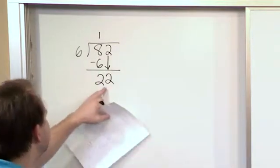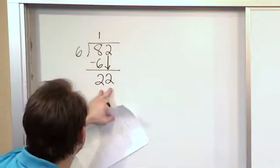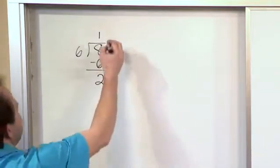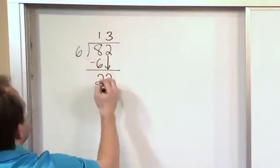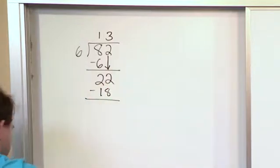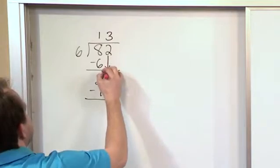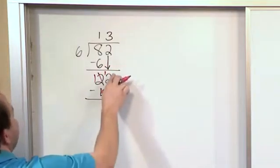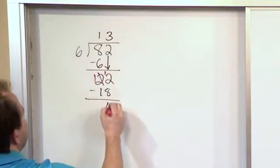How many times will 6 go into 22? 6 times 4 is 24. That's too many. 6 times 3 is 18. So, 3 goes there. 3 times 6 is 18. We subtract. And then we need to maybe borrow a little bit. If you can't do this in your head, make that a 12, make that a 1. 12 minus 8 gives you 4.